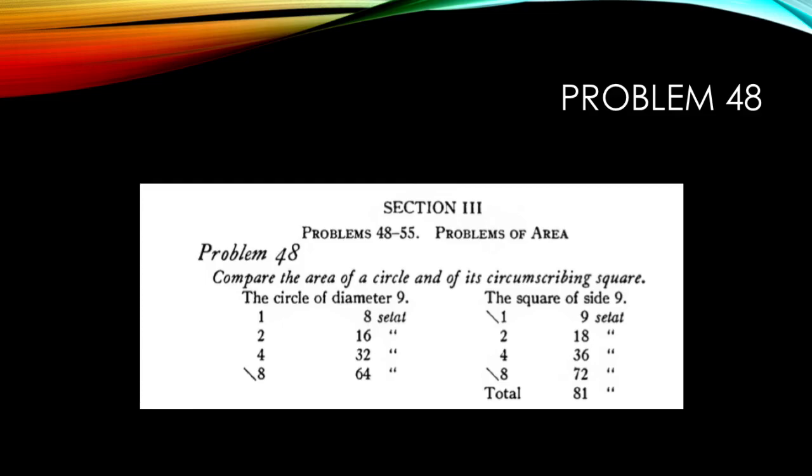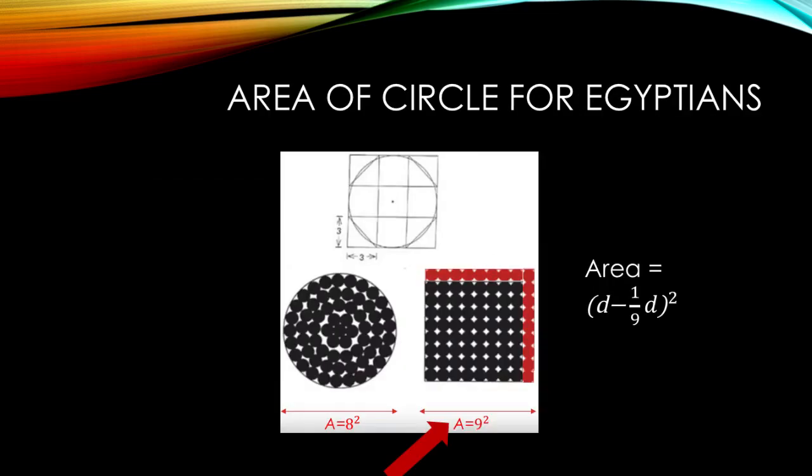It's 9 plus 72. Total is 81. So the area of the square is 81. The area of the circle is 64.